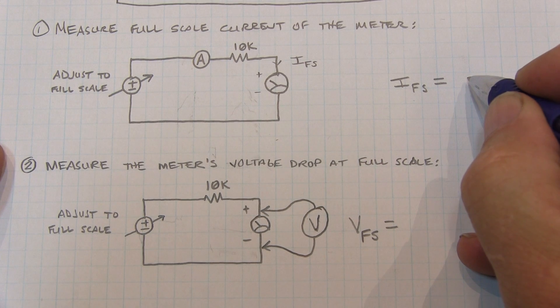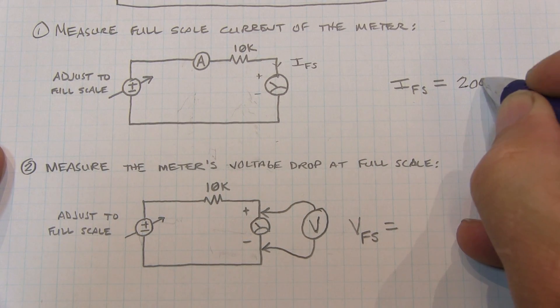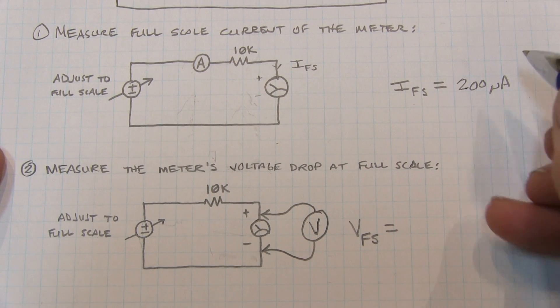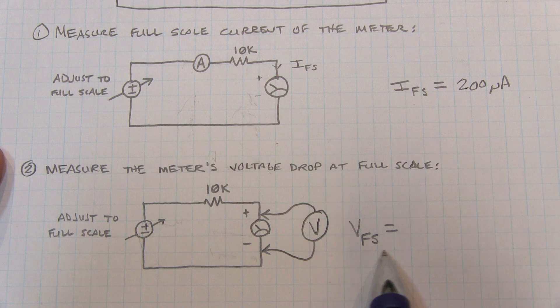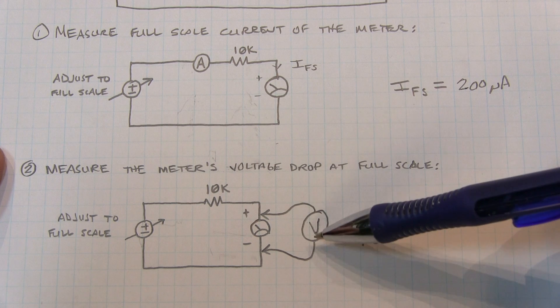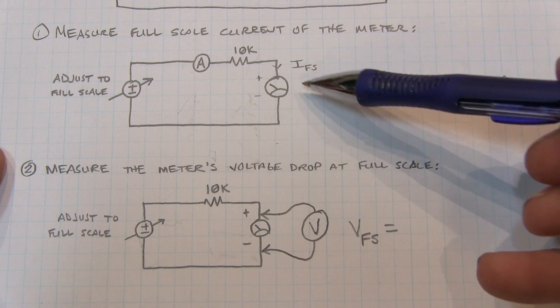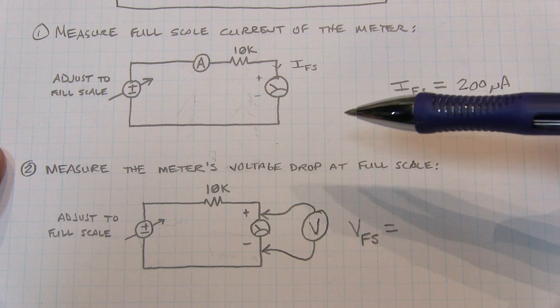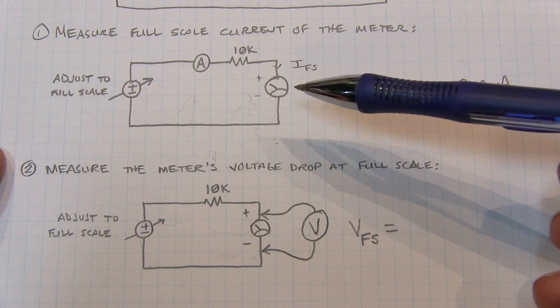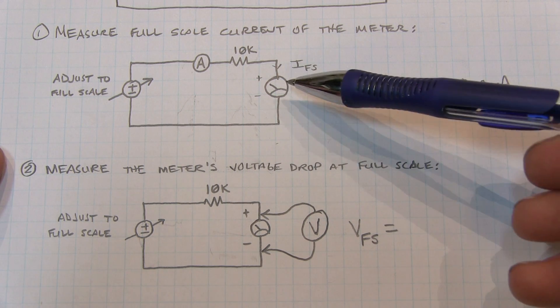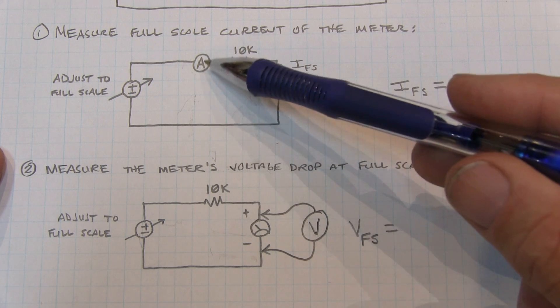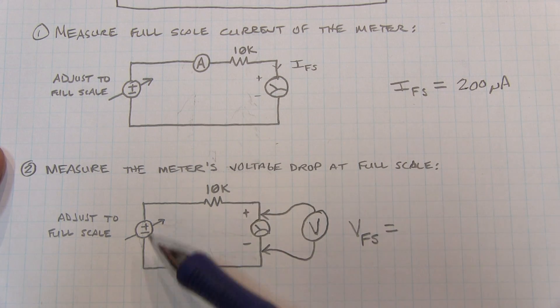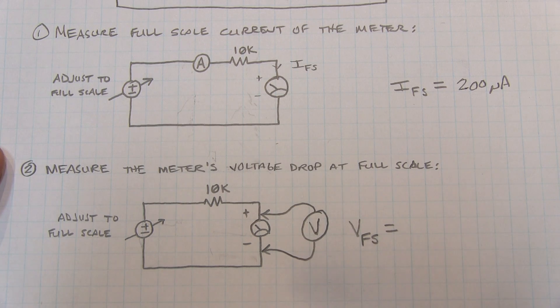We know our full scale current reading is 200 microamps. So now let's also measure the full scale voltage. Now of course, if you've got an accurate voltmeter that you could just stick in parallel when you're making this measurement, you could just do this all at once. In my case, I've only got one bench DMM and I want to use it to get the best precision. So I'm just going to change it from being an ammeter, take it out of circuit, and then measure the voltage across the meter at full scale using the voltmeter function.